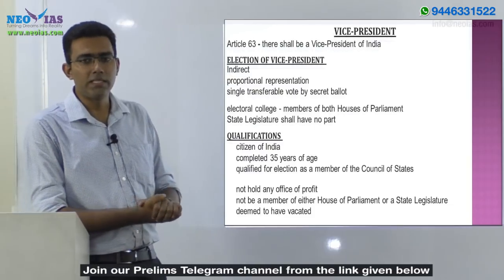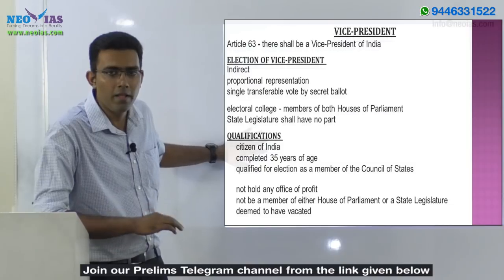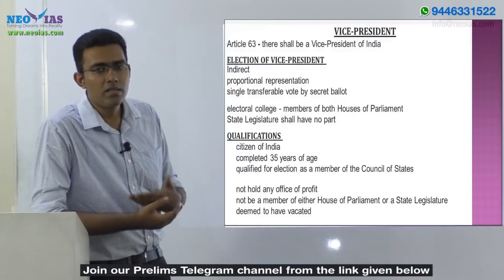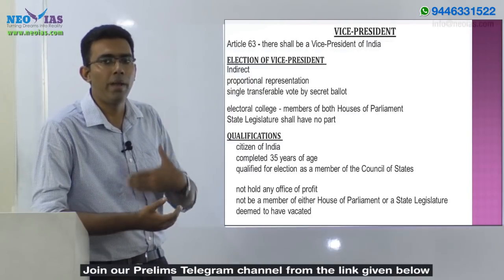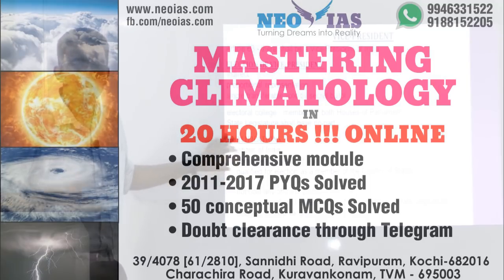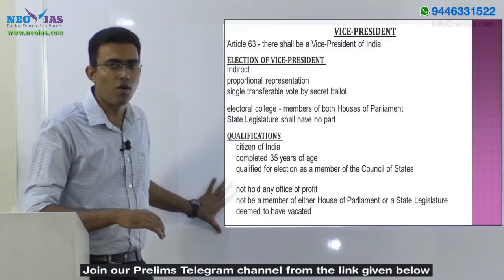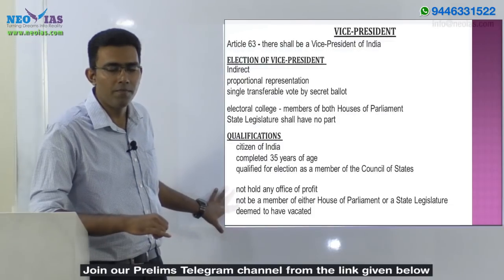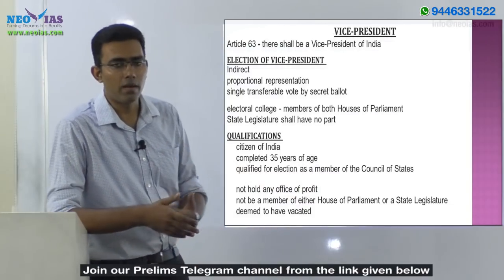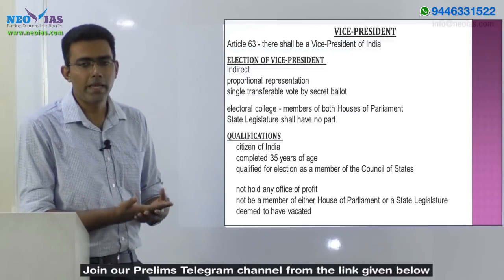Regarding qualifications, the Constitution states the candidate must be a citizen of India, must have completed 35 years of age, and must be qualified to become a member of Rajya Sabha. Additionally, he or she should not hold any office of profit, and should not be a member of either House of Parliament or any state legislature — if elected, they are deemed to have vacated those seats.